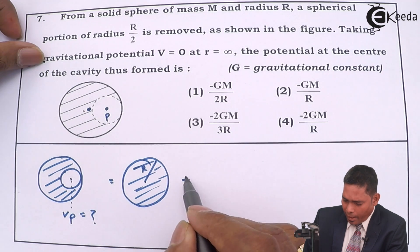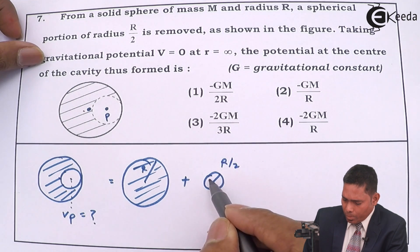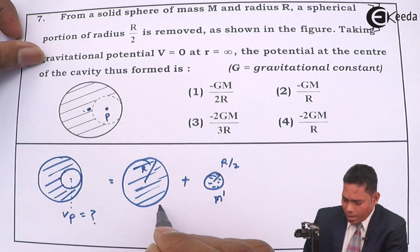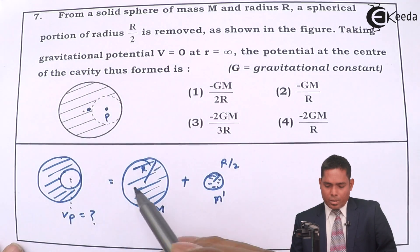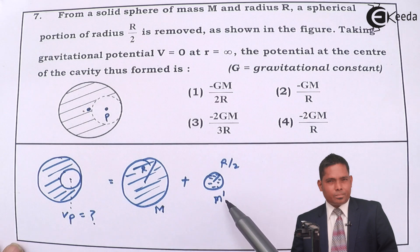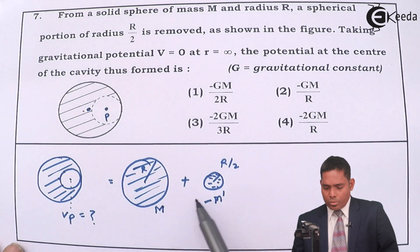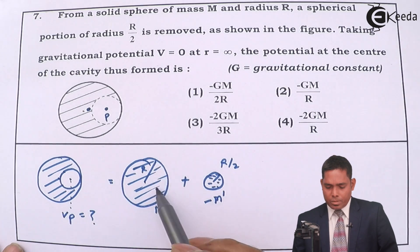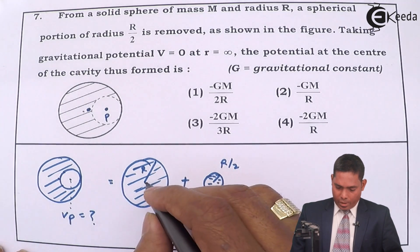We consider the small sphere of radius R/2 to be removed. Its mass is m dash. The original solid sphere has mass m. The removed portion has mass m dash, and we treat it as a negative mass. Adding the superposition of these two — the full sphere plus the negative-mass small sphere — gives the cavity configuration.